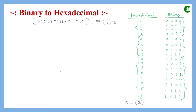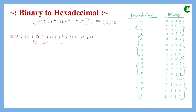For the integer part we start from the LSB and group four bits at a time moving towards the MSB. The first group has four bits, the second group has four bits, and the third group is left with only two bits, so we add two leading zeros to complete the group. For the fractional part, we start from the MSB; after the first group of four bits, the remaining three bits get one trailing zero added.